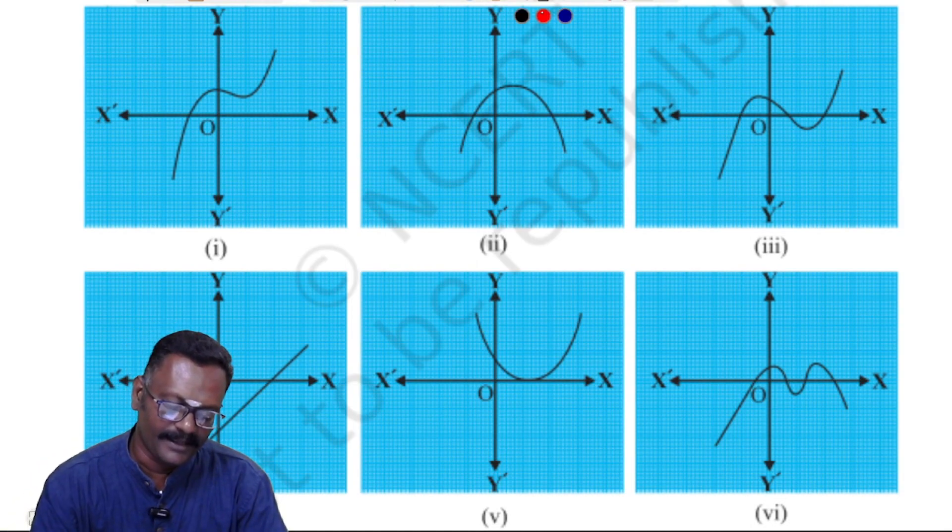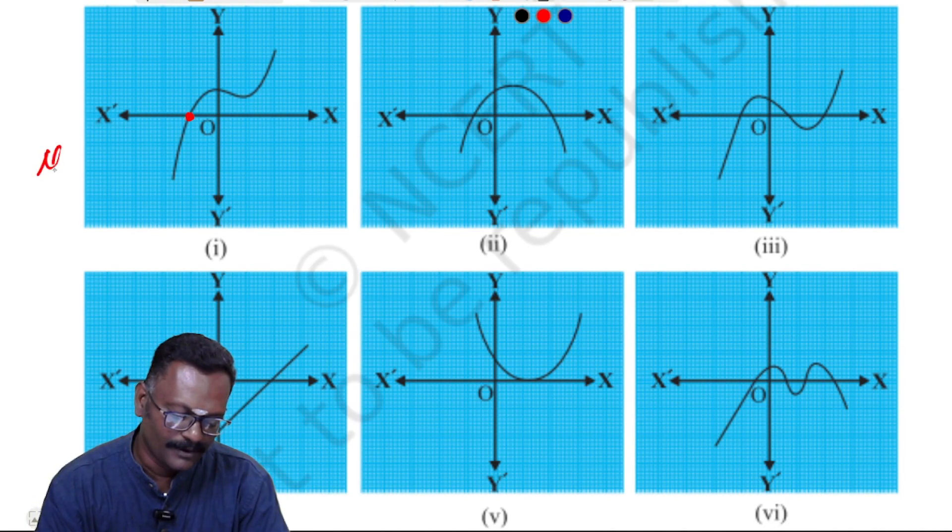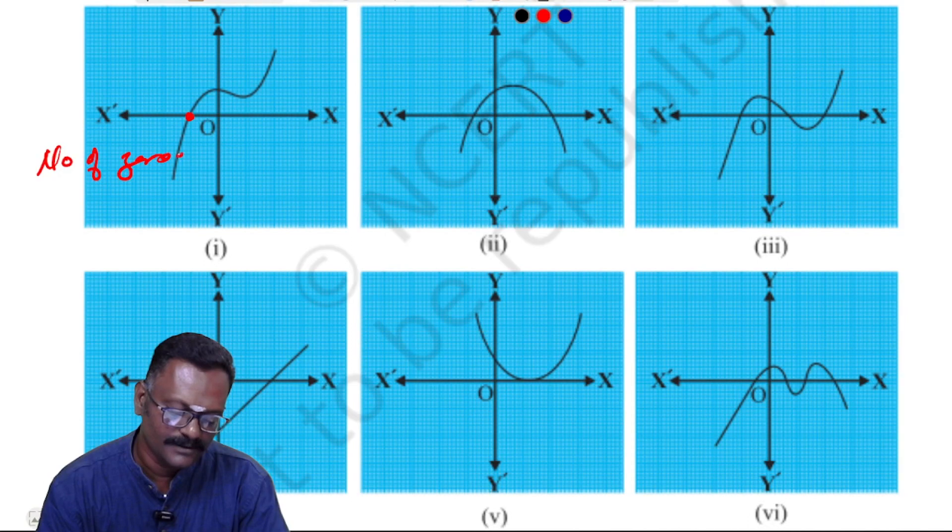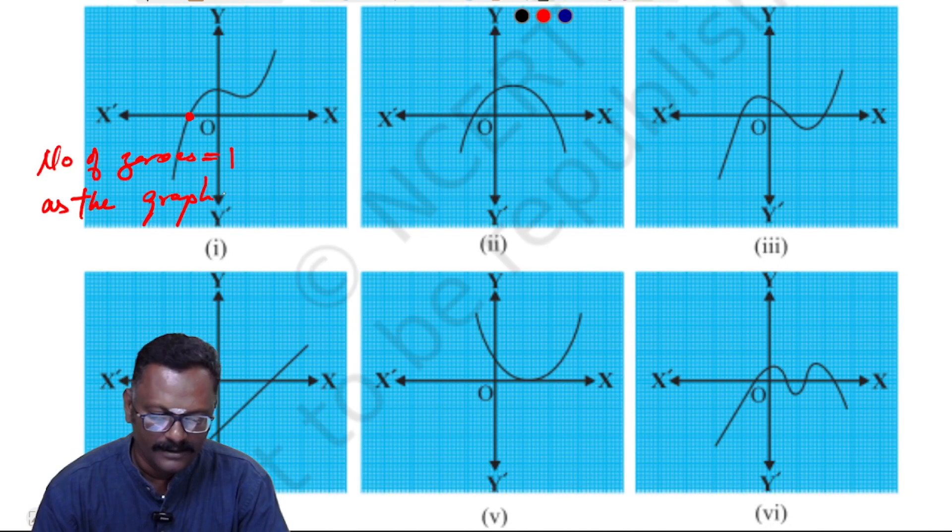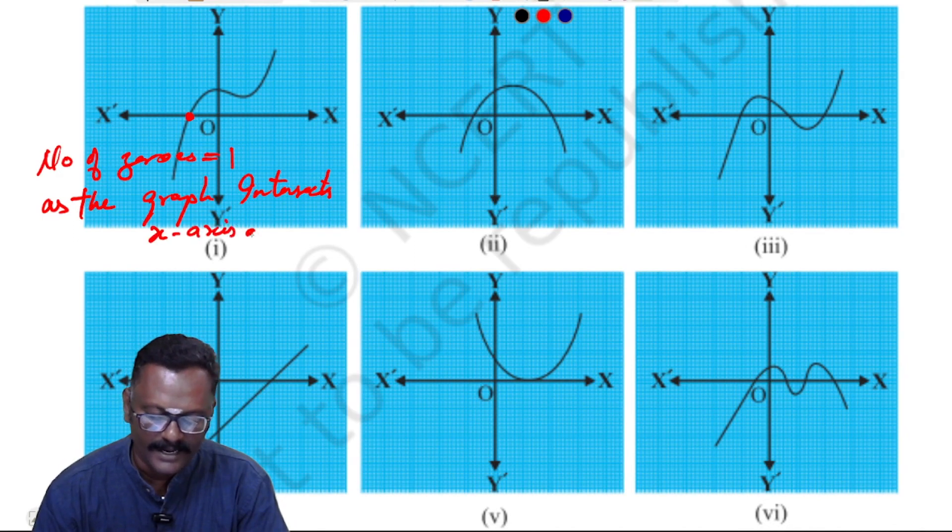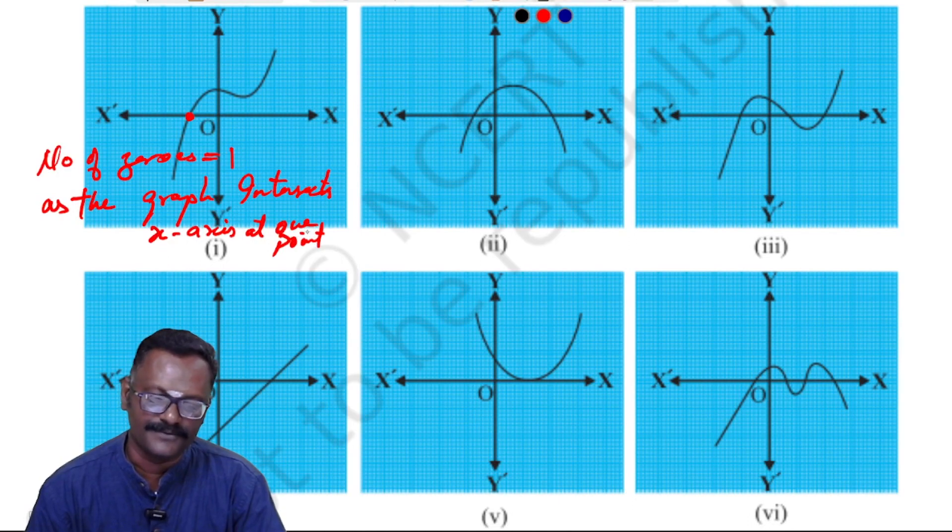In the first one, the number of zeros is 1. The reason is that the graph intersects the x-axis at one point. When the x-axis is touched or intersected, that gives us the number of zeros.